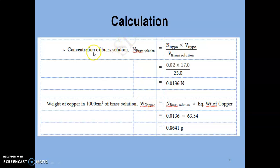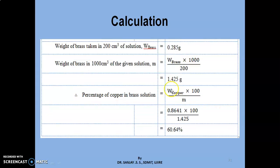Calculation. Concentration of brass solution or its normality can be determined by knowing the normality of hypo and volume of hypo consumed during the titration and volume of brass solution pipetted. Weight of copper in a liter of brass solution can be calculated by knowing the equivalent weight of copper and the strength of the brass solution.